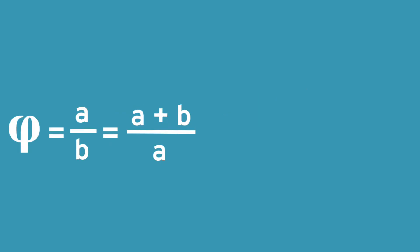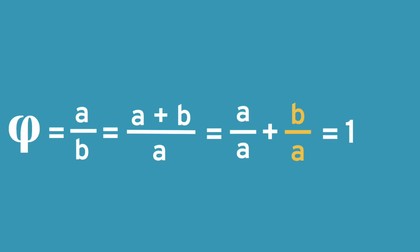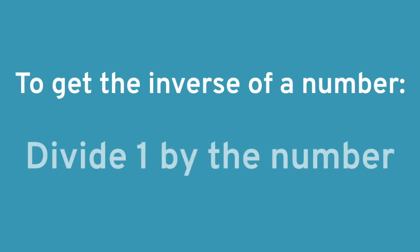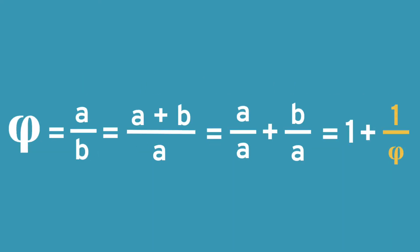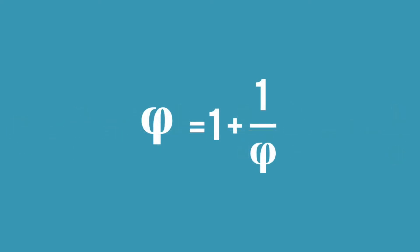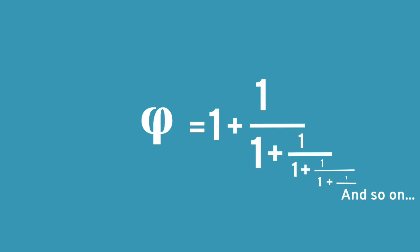Let's do the math to simplify this. A plus B divided by A is equal to A over A plus B over A. Now A over A is equal to 1. B over A is the inverse of A over B. We know that A over B is equal to phi, so that means B over A must be equal to the inverse of phi, which is 1 over phi. Therefore, we now have phi equals 1 plus 1 over phi. This is interesting because phi is defined in terms of itself. We could instead write this as 1 plus 1 over 1 plus 1 over 1 plus 1 over, and it just goes on.